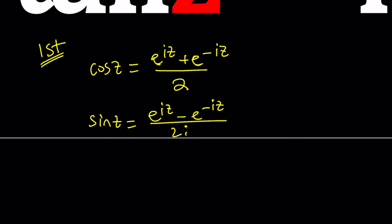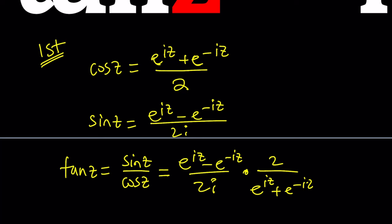Now from here we're going to do something magical. Tangent Z is sine Z over cosine Z, right? So we get e to the iz minus e to the negative iz over two i times the reciprocal of cosine, which is two over e to the iz plus e to the negative iz, and we want this to be i. How amazing. Two cancels out.